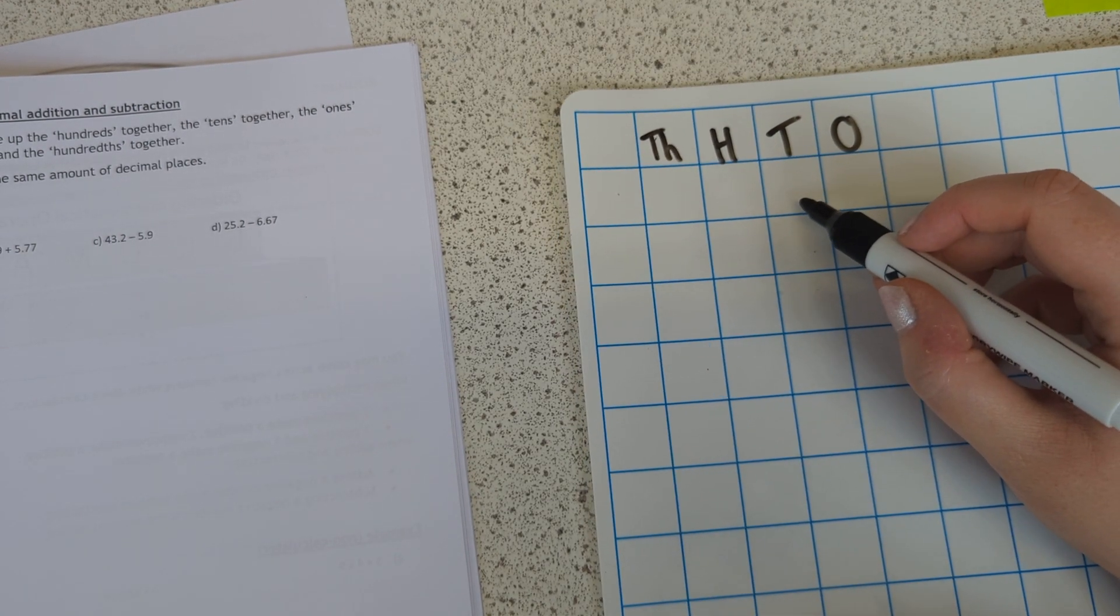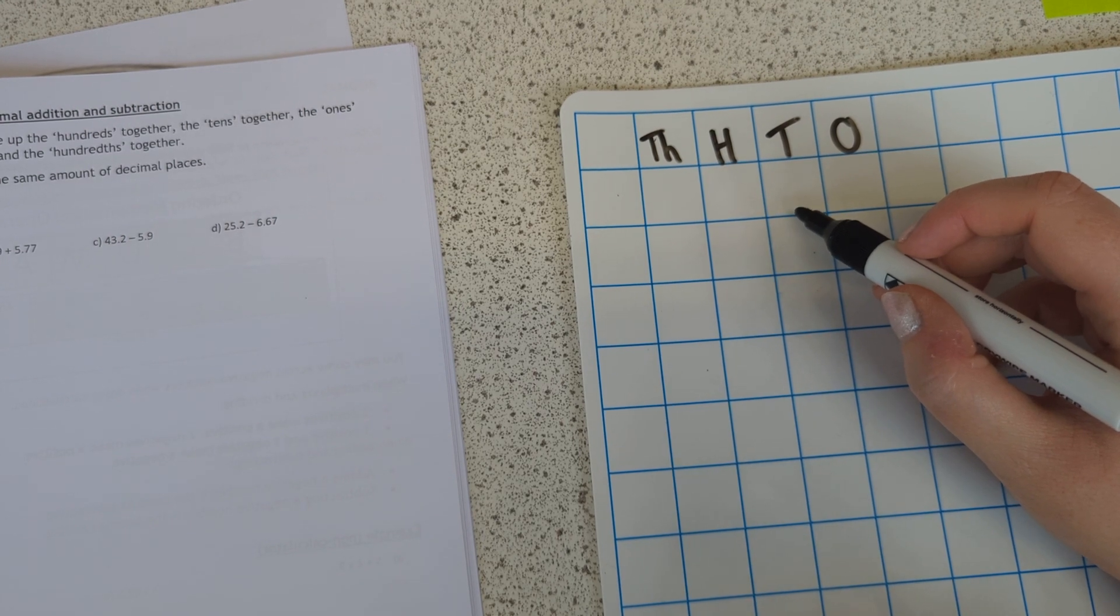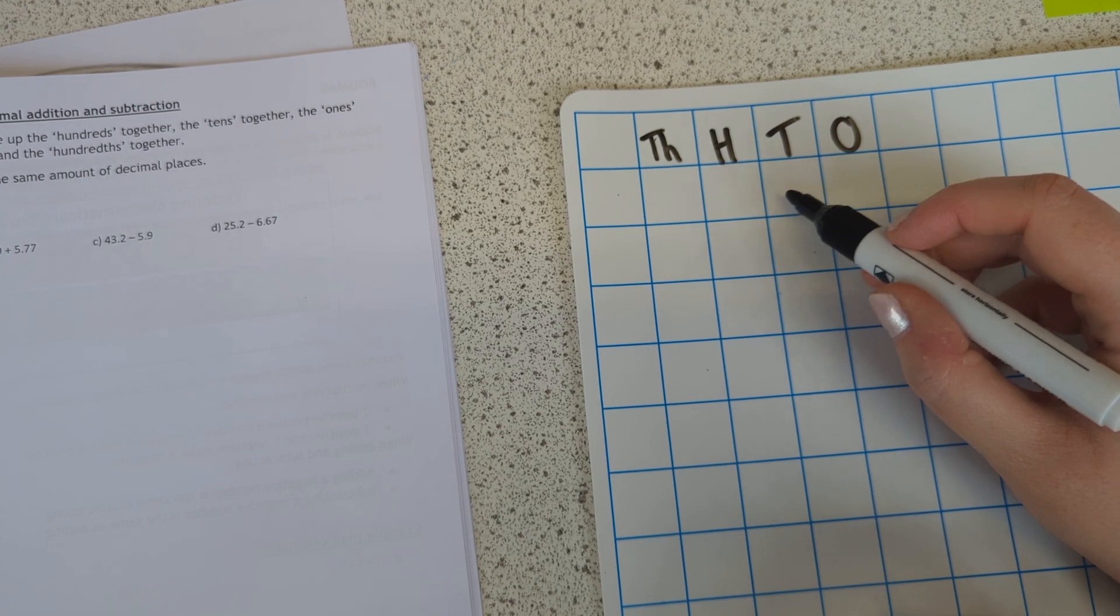There are ten lots of tens in one hundred. Ten, twenty, thirty, forty, fifty, sixty, seventy, eighty, ninety, a hundred. So there's ten lots of tens in a hundred.